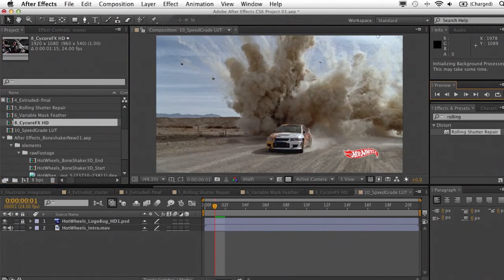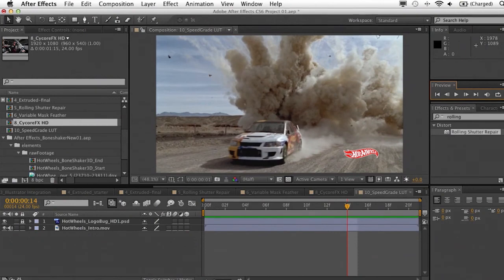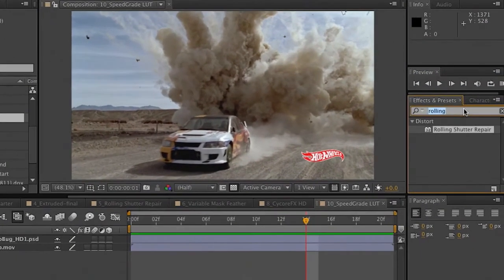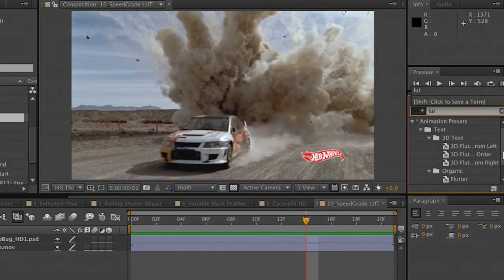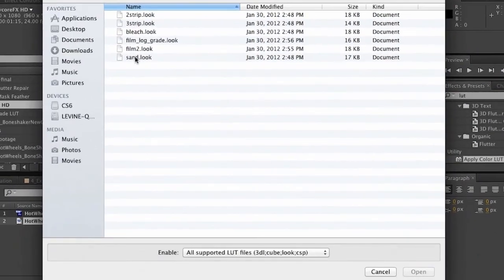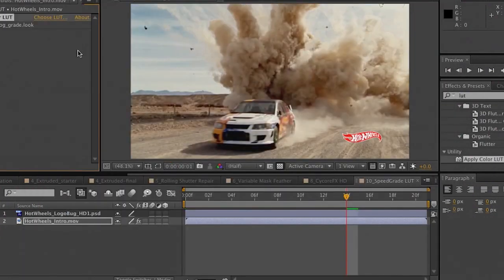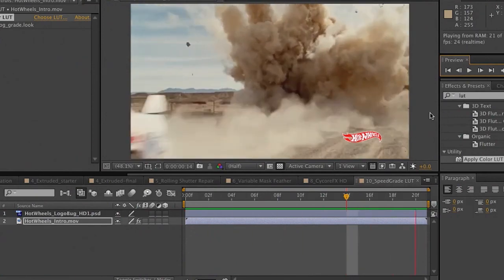So in the footage that we have here, you can see that we've got this kind of flat-looking piece with the car. And I wanted to bring in some specific looks that were created for me to apply to this footage. So I can go over to Effects and Presets. We're going to pull up the same LUT feature that we had, Apply Color LUT. And now we can choose a LUT file. We have a couple of different presets here. Let's go ahead and go to our FilmLoggrade.look. And you'll notice that we can also still bring in 3DL, Cube, and CSP files. Click Open, it applies the LUT, RAM preview, and there it is. Unbelievably fast, unbelievably quick.